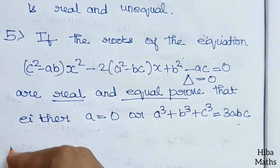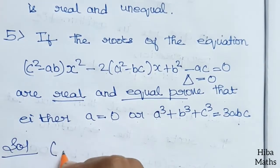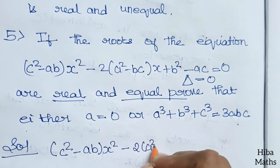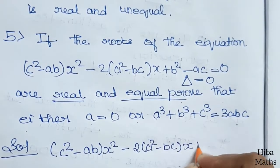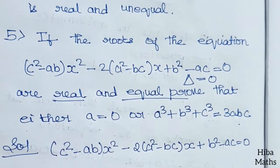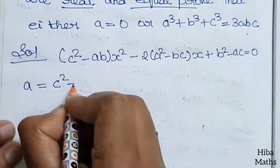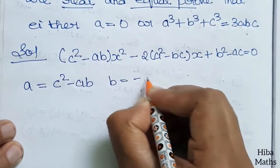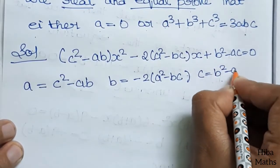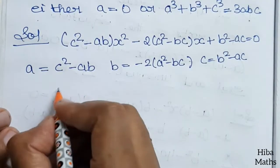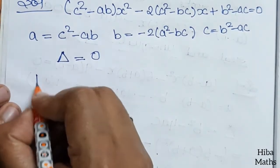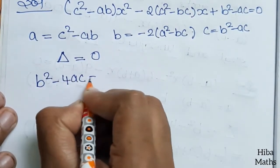So let's solve this. We have the given equation: (c² - ab)x² - 2(a² - bc)x + (b² - ac) = 0. Here A = (c² - ab), B = -2(a² - bc), and C = (b² - ac). So let Δ = 0, that is B² - 4AC = 0.